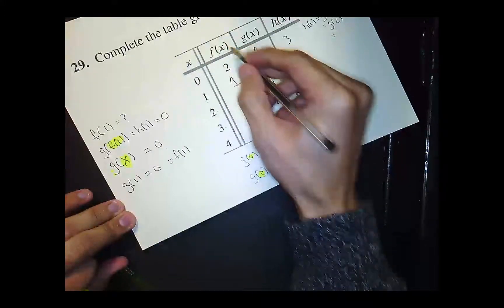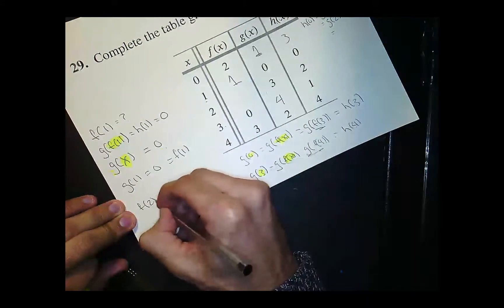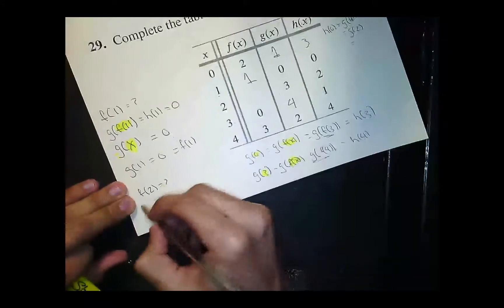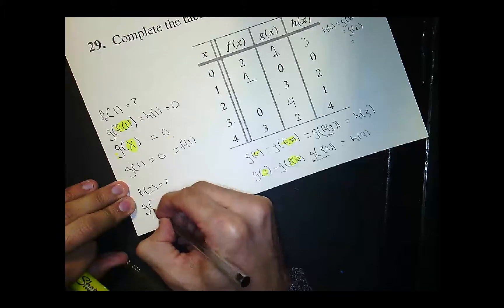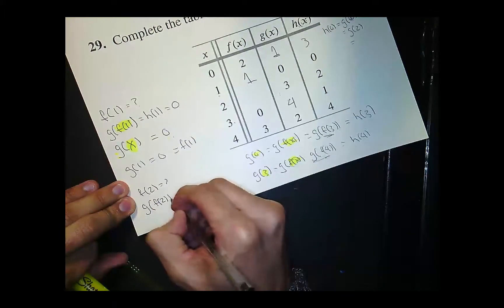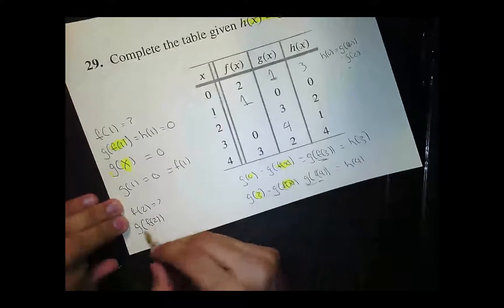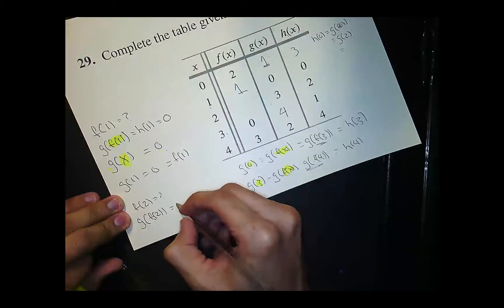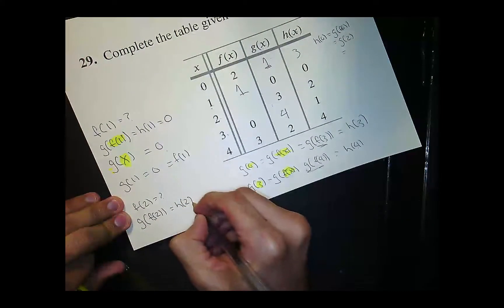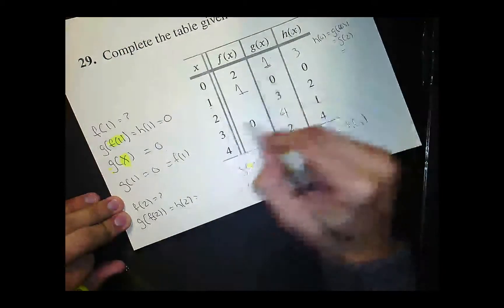All right, last one. f of 2. What does that equal? Well, I know that g of f of 2, just using, what I'm doing here is I'm using that composition, right? g of f of 2. That's like saying h of 2. And then h of 2 is 2.